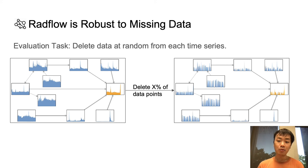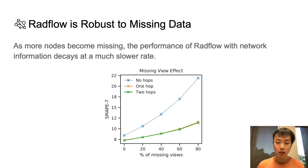And finally, we find that RADflow is robust to missing views and missing edges. In this evaluation, we delete data points inside each time series at random and see how that affects the SMAP metric. As we move to the right on the x-axis here, we delete more data points. And as we delete more data points, the models with network information, those are the models with one and two hops, they decay at a much slower rate than the model without network information.